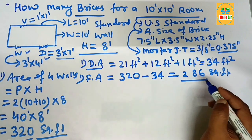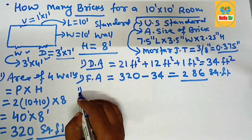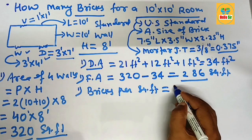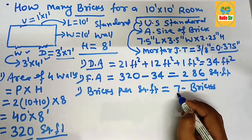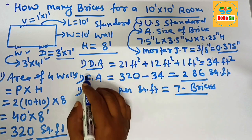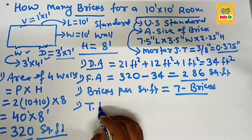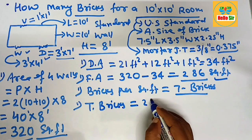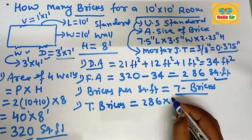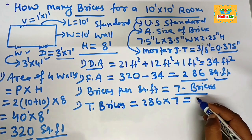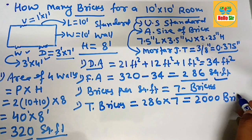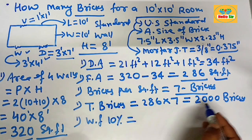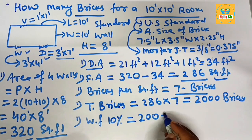This 286 square feet is the area that requires brickwork. The brick quantity per square foot is about 7 bricks, meaning 7 bricks are required for 1 square foot. To calculate the total bricks, multiply the total square footage of 286 by 7 bricks per square foot. After multiplication, this comes to approximately 2000 bricks. Now calculate the waste factor at 10 percent — 10 percent of 2000 is 200.